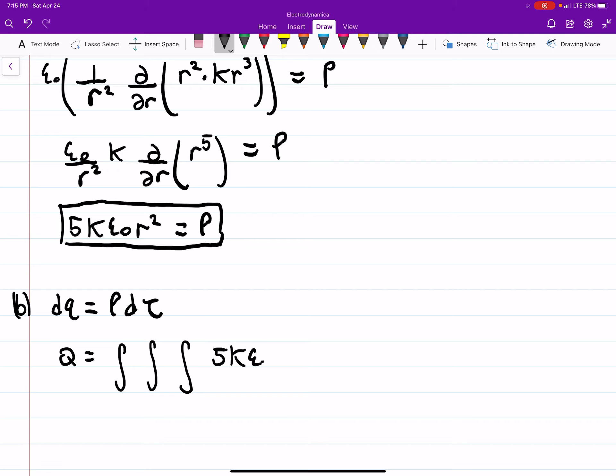But rho we already found in the previous step. It's 5k epsilon naught r-squared. And tau is the volume element, which for spherical coordinates will be r-squared sine theta dr d theta d phi. So this bit is your d tau, this is your rho.